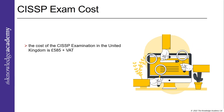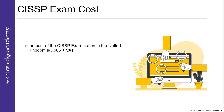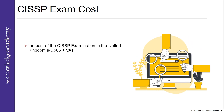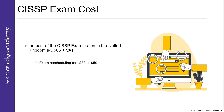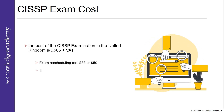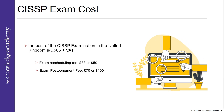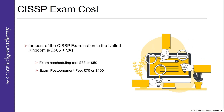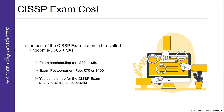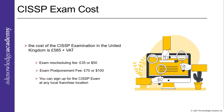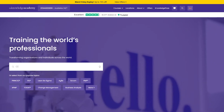Additional costs include an exam rescheduling fee of 35 pounds or 50 dollars, and an exam postponement fee of 70 pounds or 100 dollars. You can sign up for the CISSP exam at any local franchisee location or at ISC² authorized Pearson VUE testing centers.